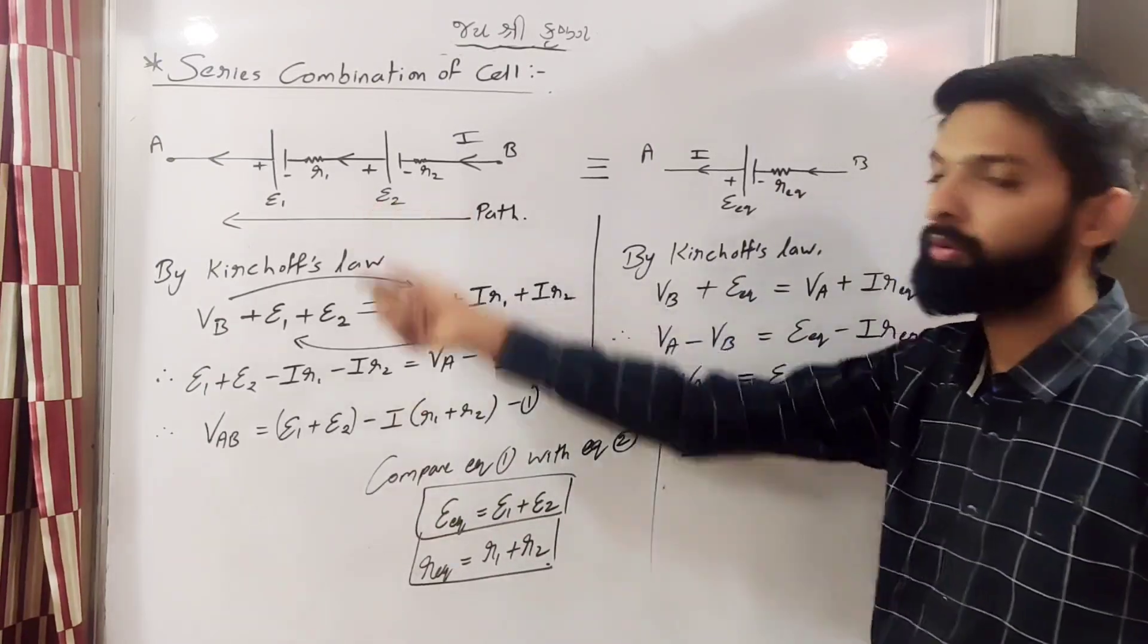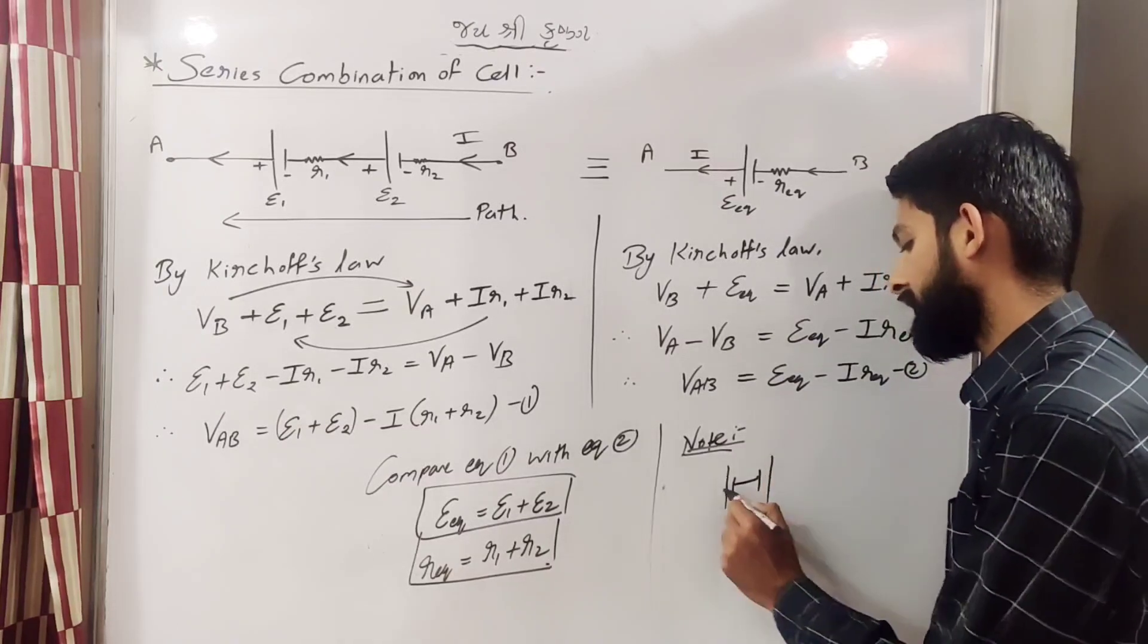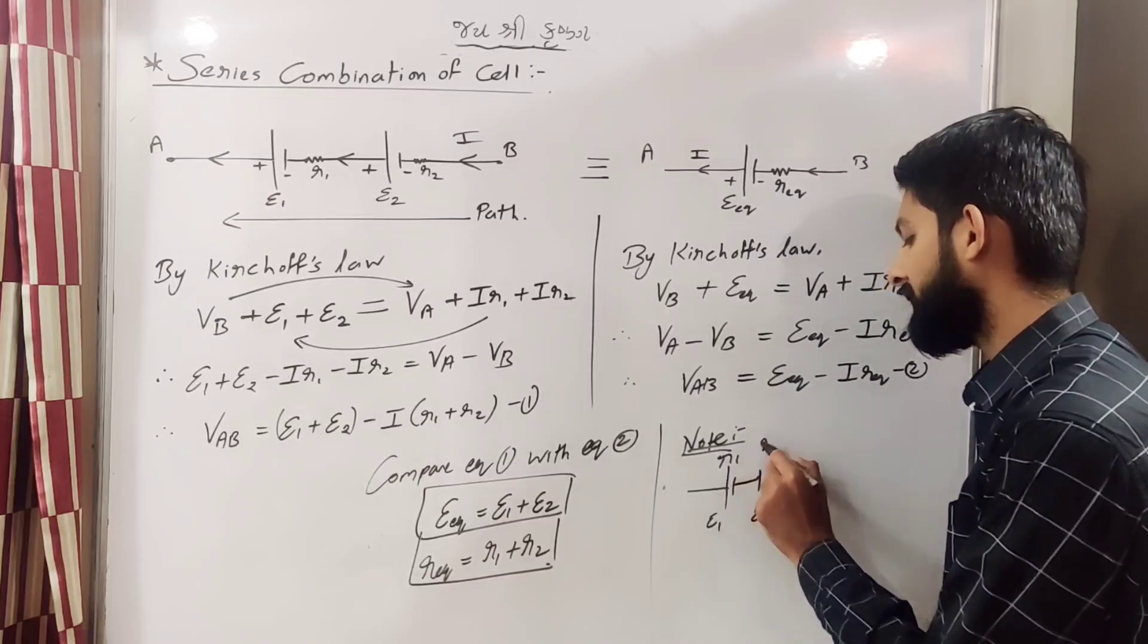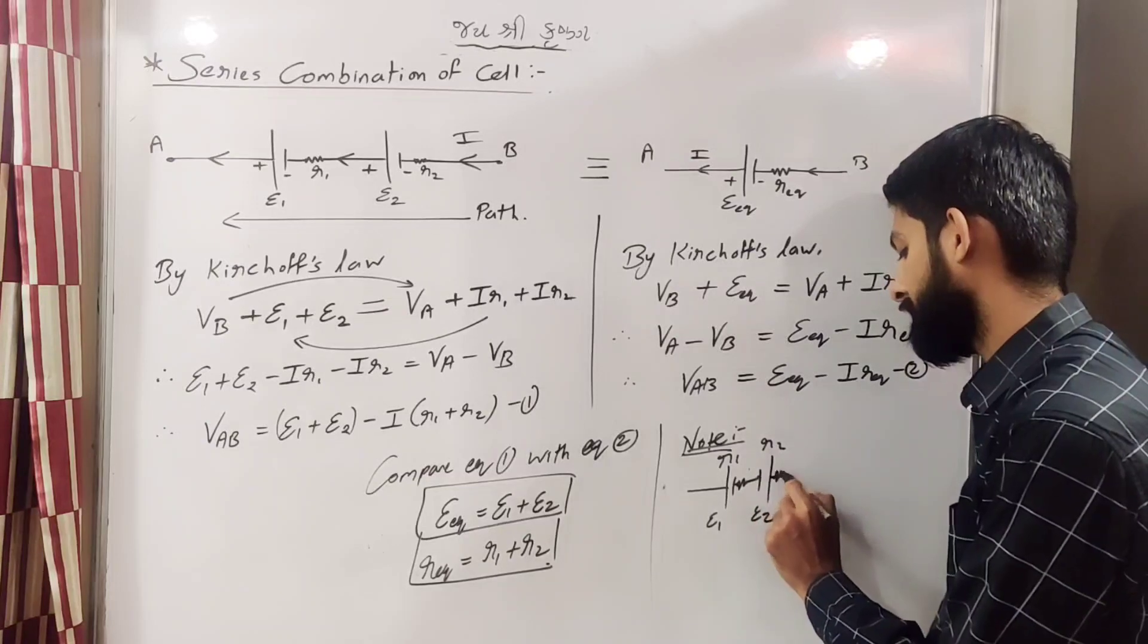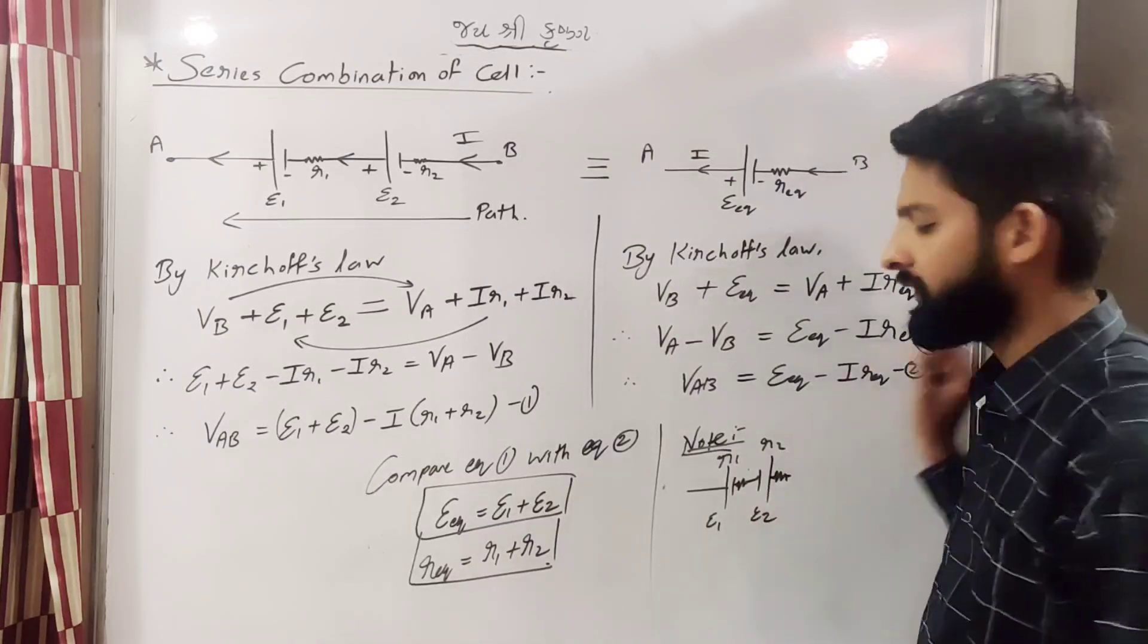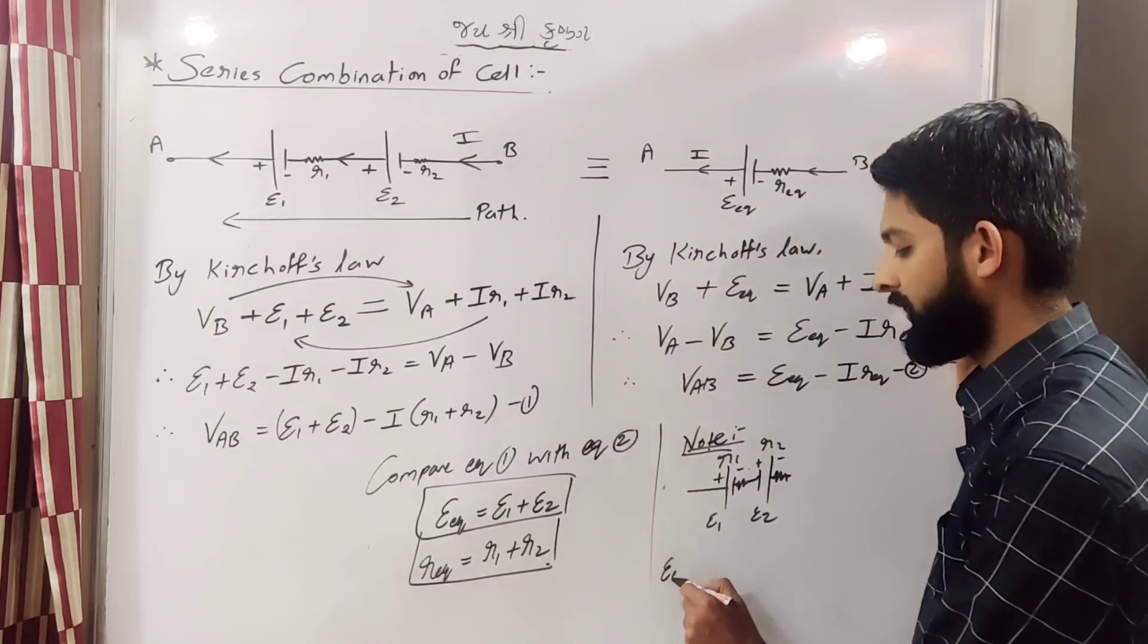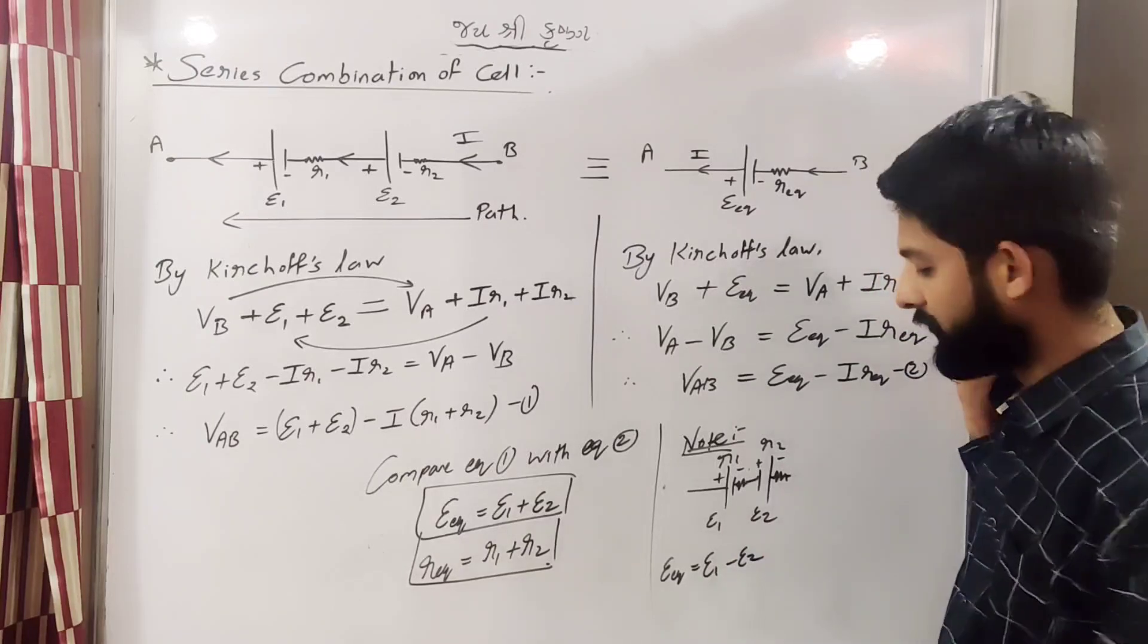Maan lo ki dono negative terminal ko ek saath lagaya ho ta, like this. Dono ka internal resistance r1 r2. Maan lo is tarah arrangement ho, the plus minus aur minus plus. Epsilon equivalent hota epsilon 1 minus epsilon 2 if is ka zyada, okay.